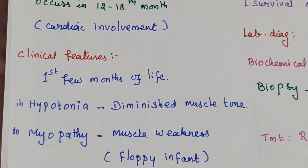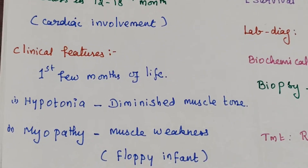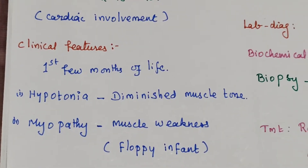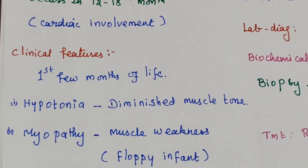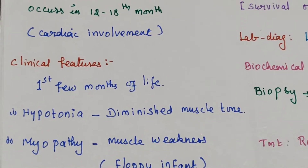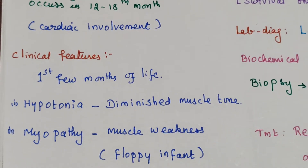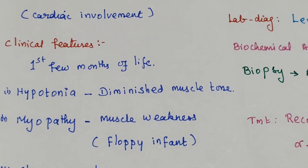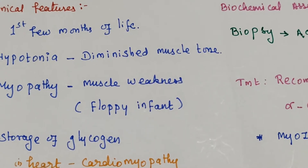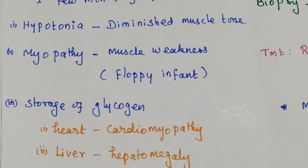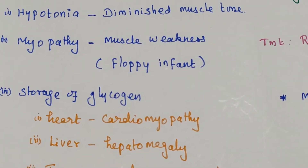The clinical features of Pompe's disease: the age of onset is the first few months of life, typically around the third month. It causes hypotonia, which is diminished muscle tone. Then myopathy with generalized muscle weakness. The infant appears floppy, so it is known as a floppy infant. Storage of glycogen occurs in the heart, liver, and tongue.